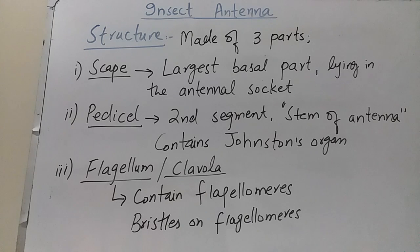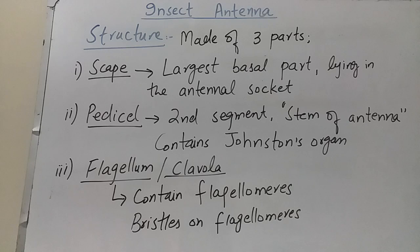Each antenna is made up of three parts. The first part is called the scape, the second is known as the pedicel, and the third is known as the flagellum, also called clavola. The scape is the first or proximal segment of the antenna — it is the largest basal part lying in the antennal socket, articulating with the head.